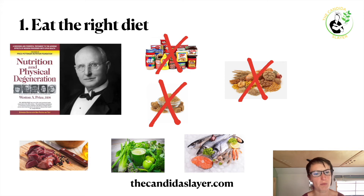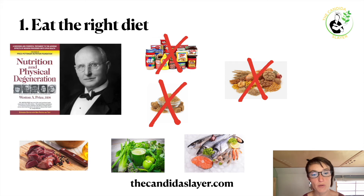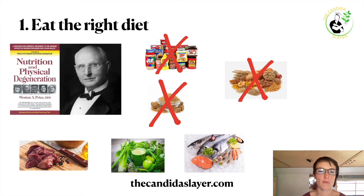Everybody is different — for some people fiber will be fine, for others it will really make their symptoms worse. That's why for dysbiosis, a sensitive gut, I prefer to recommend vegetable juices rather than whole vegetables. But when you do vegetable juices, be careful with vegetables high in oxalates — I have a video about oxalates. If you plan on making green juices, please watch it — I'll put the link in the top right corner.